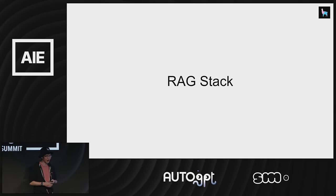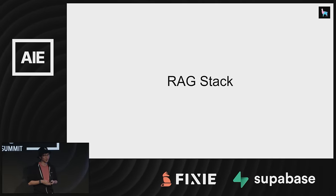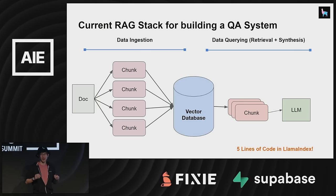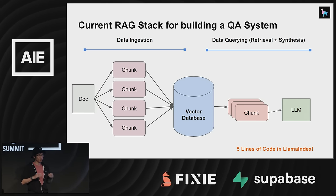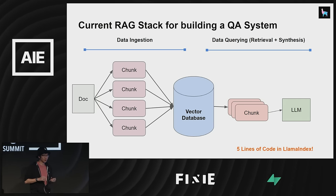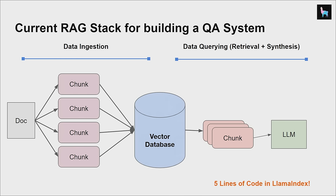Let's talk about RAG — retrieval augmented generation. It's become a buzzword recently, but let's walk through the current RAG stack for building a QA system. This really consists of two main components: data ingestion, as well as data querying, which contains retrieval and synthesis. If you're just getting started in LlamaIndex, you can basically do this in around five lines of code, so you don't need to think too much about it.